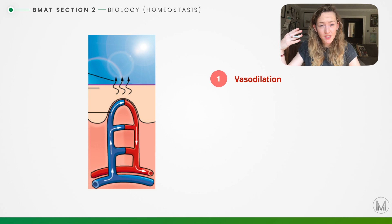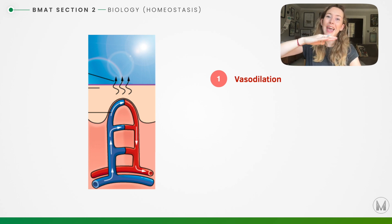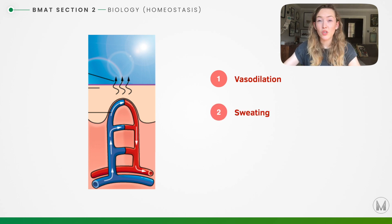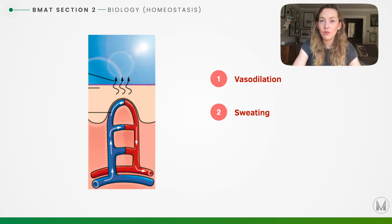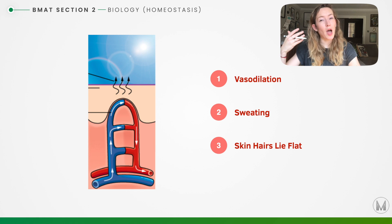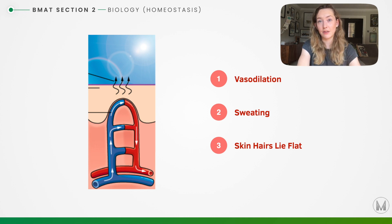In vasodilation, nerve signals from our hypothalamus tell our arterioles to dilate. This allows warm blood to flow to the surface of the skin, where heat is lost to the surroundings. Impulses are also sent to glands on the skin causing sweating — water evaporating from the skin surface is endothermic, so it is cooling, transferring heat energy from the skin to the air. Nerve impulses also tell the erector pili muscles to lay the hairs flat, trapping less air and retaining less heat.